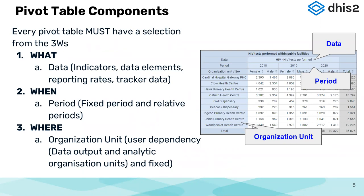The second part is the 'when,' which is the period. For those who have been using DHIS2, we have two categories of periods: fixed periods and relative periods. We'll look at the difference and how they can be accessed once we get into the system demonstration. And of course, the 'where' is the organization unit — how you retrieve it depends on what is in your reporting hierarchy.